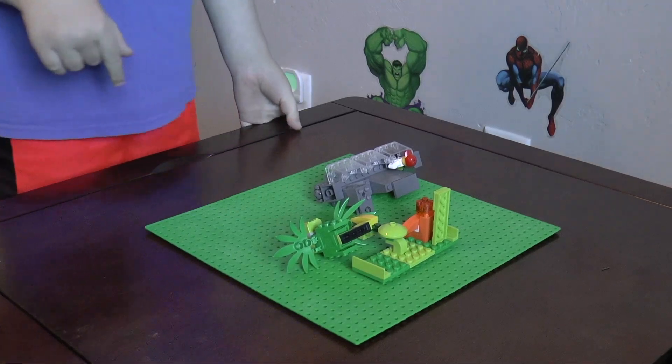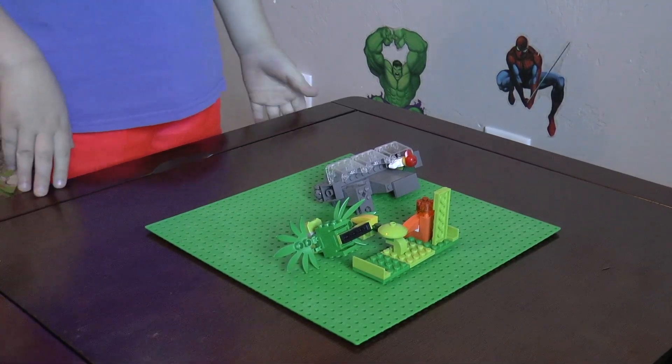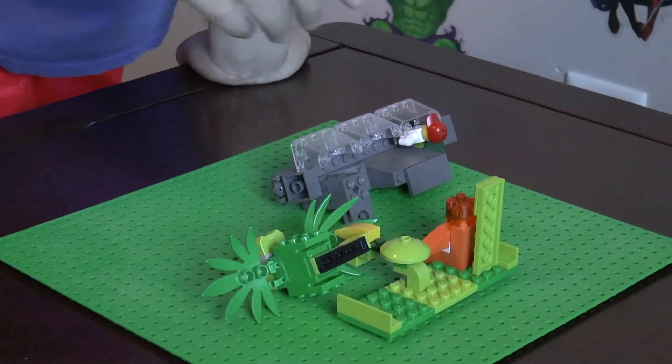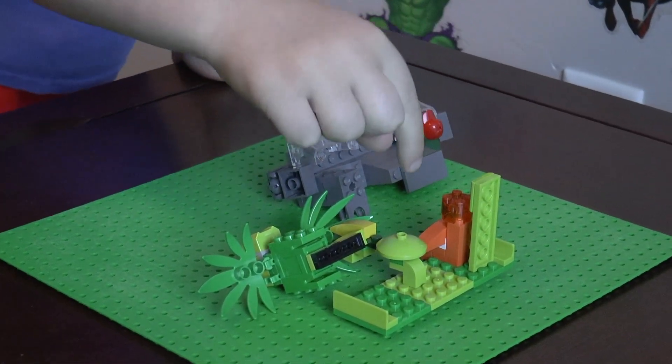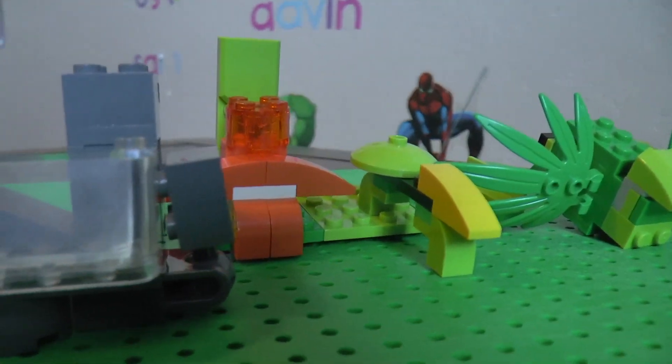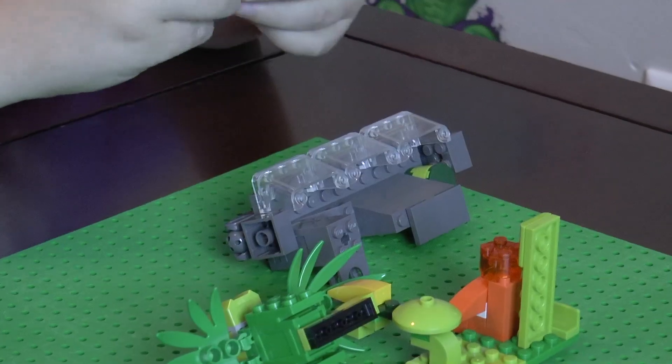Okay, so this is my first building tutorial. It's about building Ash, but not this flying thing, Trapinch, Vibrava and Flygon. But not the stand either. Let's build Ash first.